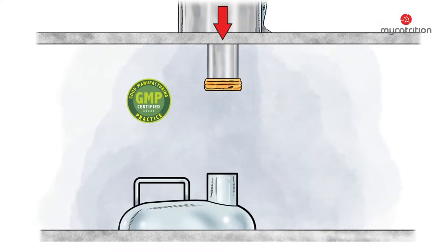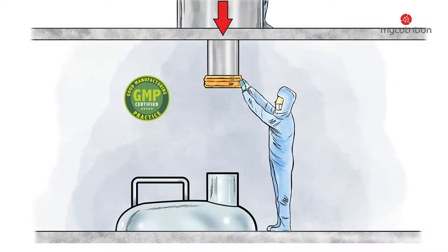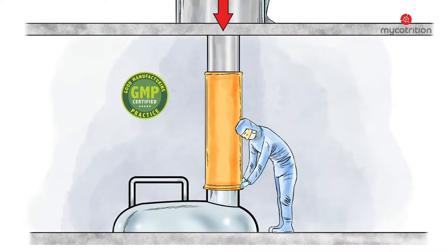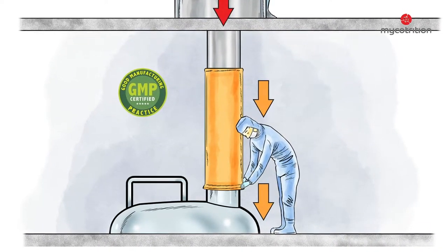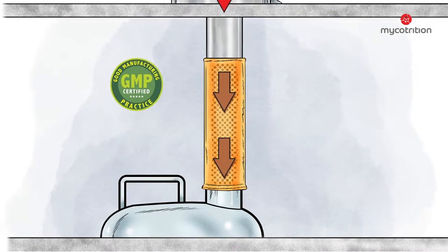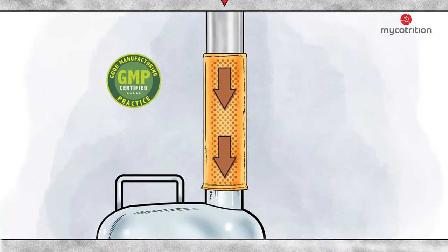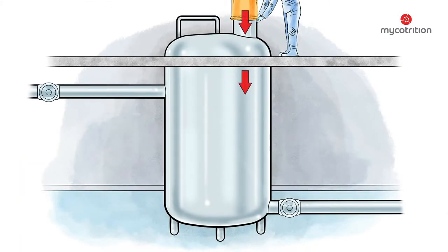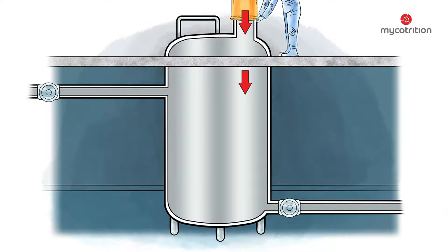The whole extraction process is carried out in a GMP environment. GMP stands for Good Manufacturing Practice and entails guidelines for the assurance of quality in production environments and processes. These guidelines are issued by state authorities. The milled mushrooms fall into the extraction tank from above and gather at the bottom.